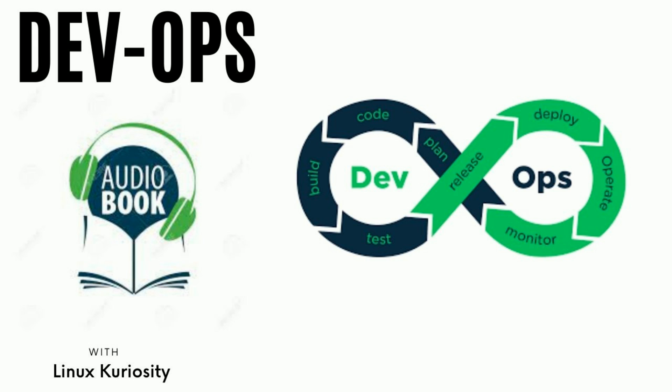Next question is: what is a sprint? A sprint is also known as an iteration, which is a short period in which the development team implements and delivers a discrete product increment. This audiobook is useful when you are preparing for a DevOps interview.